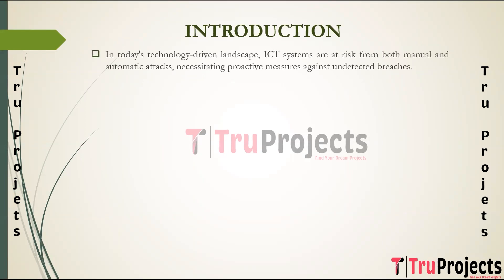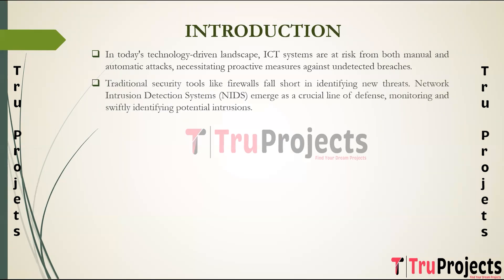The project highlights the increasing reliance on ICT systems and networks which manage sensitive user data and are vulnerable to attacks. These attacks, whether manual or automatic, continuously evolve, leading to undetected data breaches. As computer networks become more pervasive, the need for robust network security becomes imperative. The project discusses the limitations of traditional security technologies such as firewalls, anti-spam methods, and antivirus software, which struggle to identify new or complex threats.